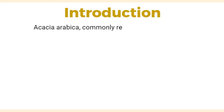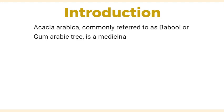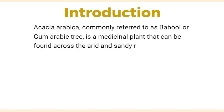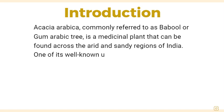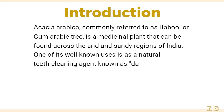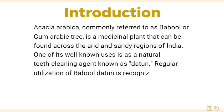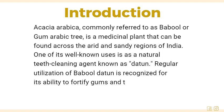Acacia arabica, commonly referred to as Babool or gum arabic tree, is a medicinal plant found across the arid and sandy regions of India. One of its well-known uses is as a natural teeth-cleaning agent known as Datun. Regular use of Babool Datun is recognized for its ability to fortify gums and teeth while reducing the buildup of plaque and inflammation of the gingiva.